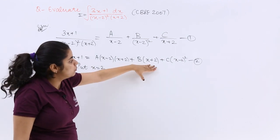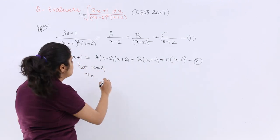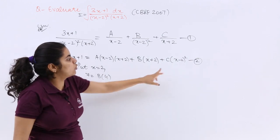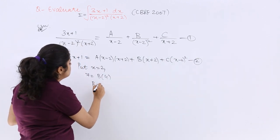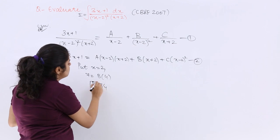B factor still remains. So it is B multiplied by 2 plus 2 which is 4. 2 minus 2, 0 whole square is 0. So B is equal to 7 over 4 or 7 upon 4.